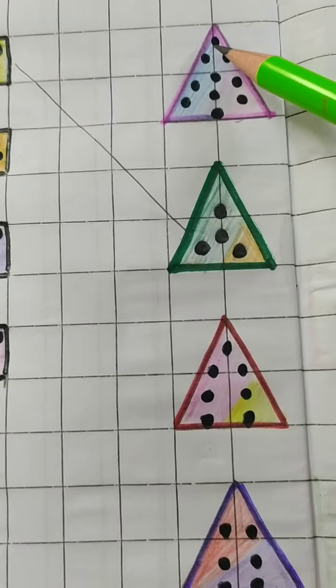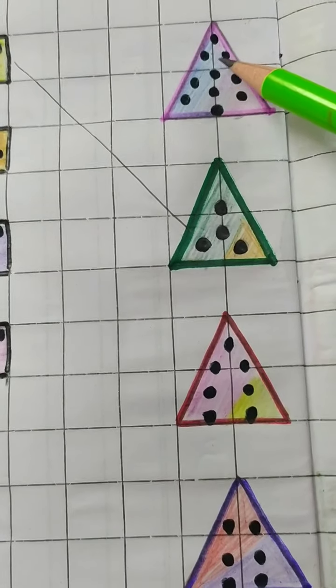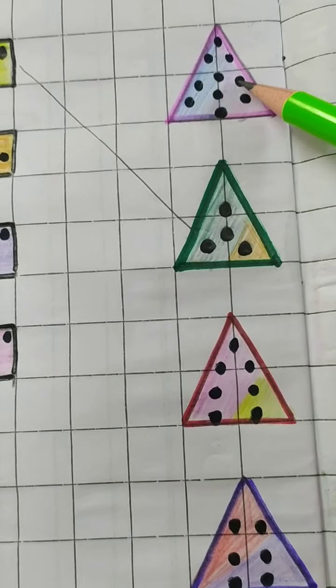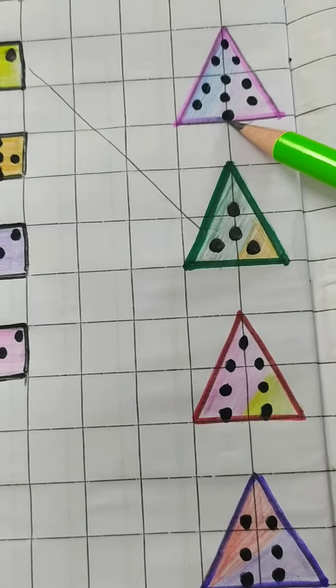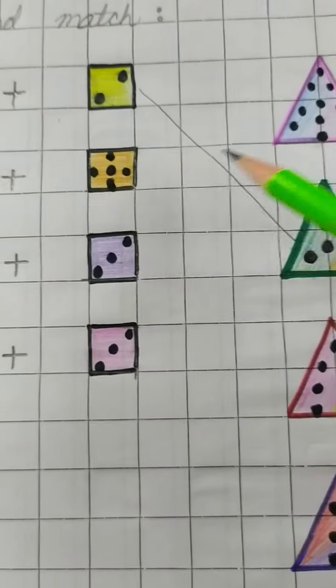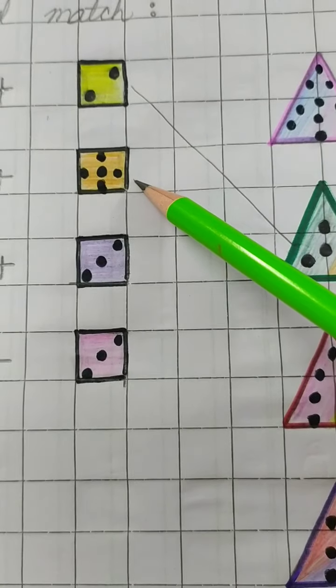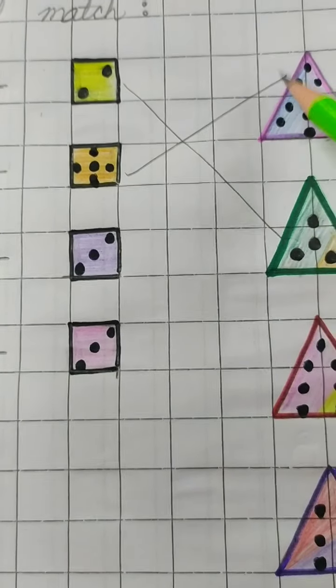Let's see this one. Okay, isko count karete hain. 1, 2, 3, 4, 5, 6, 7, 8, 9 and 10. Oh, wow! We got the answer. So what we'll do? We'll just join a line to match them.